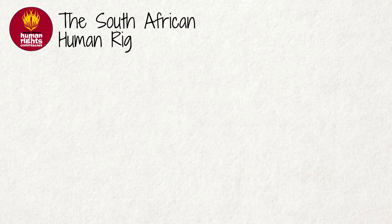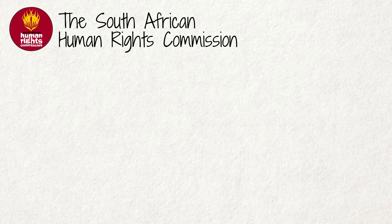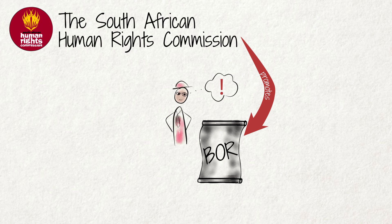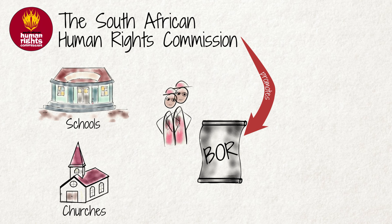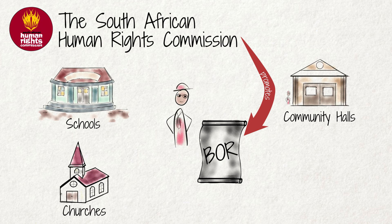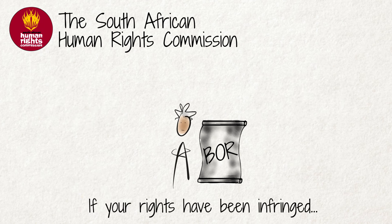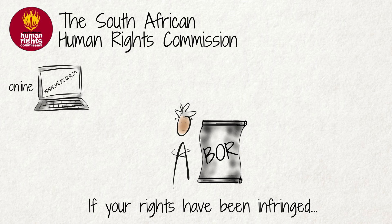The South African Human Rights Commission. The South African Human Rights Commission promotes all the rights protected in the Bill of Rights. The SAHRC is also tasked with making people aware of their rights in the Bill of Rights. It does this by visiting schools, churches, community halls and other institutions. If your rights have been infringed, you can complain to one of the SAHRC offices across the country online, in person, or by post or fax.